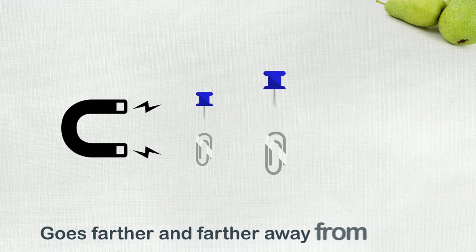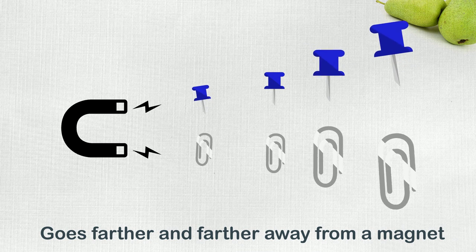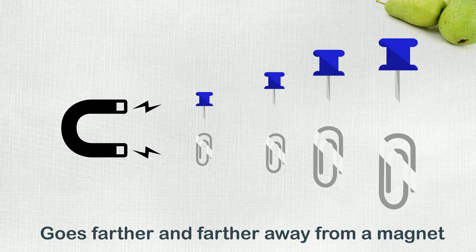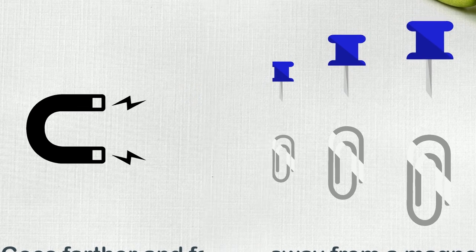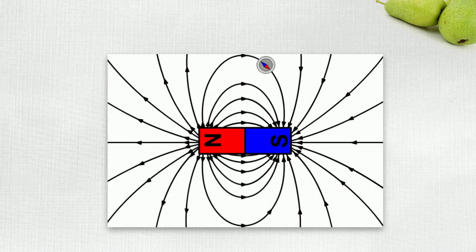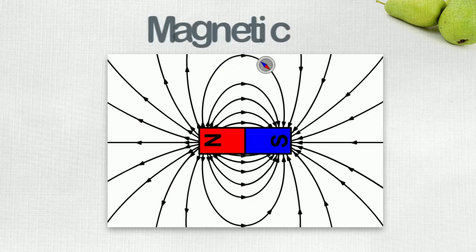As the object goes farther and farther away from a magnet, the pull or magnetism of the magnet on the object becomes weaker and weaker and disappears at one point. The area of that invisible force or magnetism, that is, the area around the magnet where the pull exists, is called magnetic field.